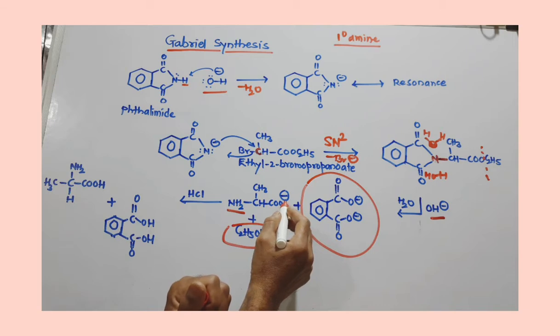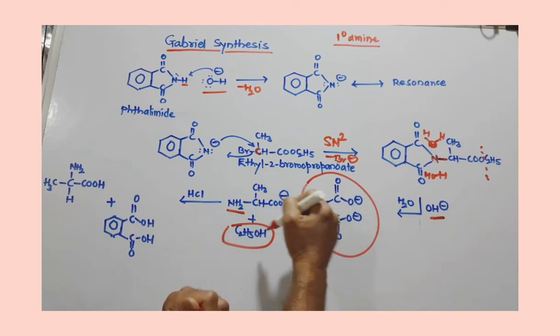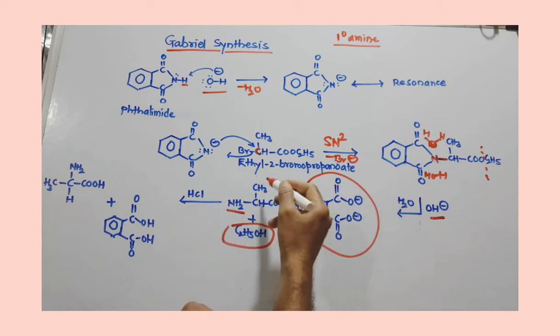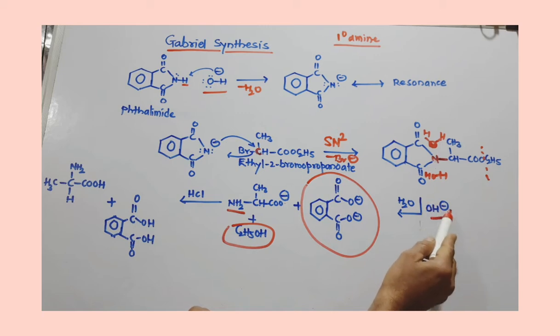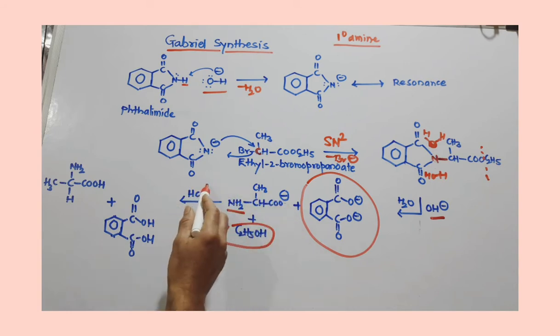That H will combine with OH and we get here carboxylate ion. So we got here one, two, and three carboxylate ions because of this OH. But we used this, this is base-catalyzed hydrolysis. So we need hydrogen. So we are going to acidify this. HCl is added in the final step, which will neutralize excess OH.